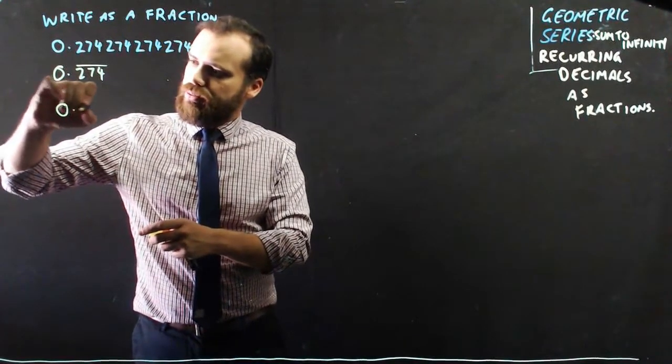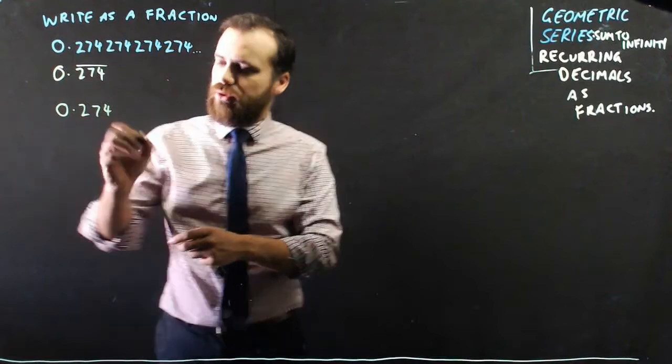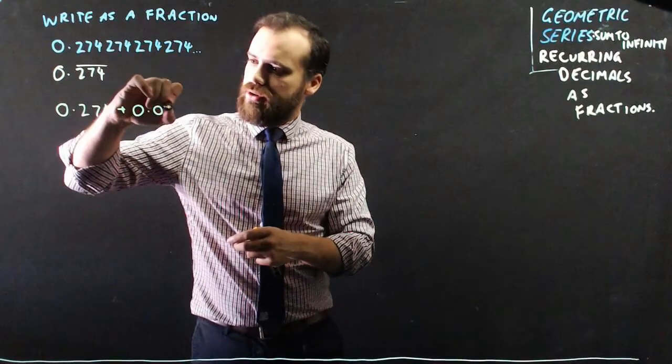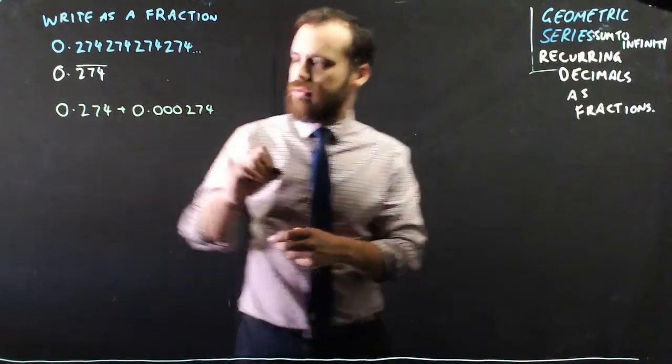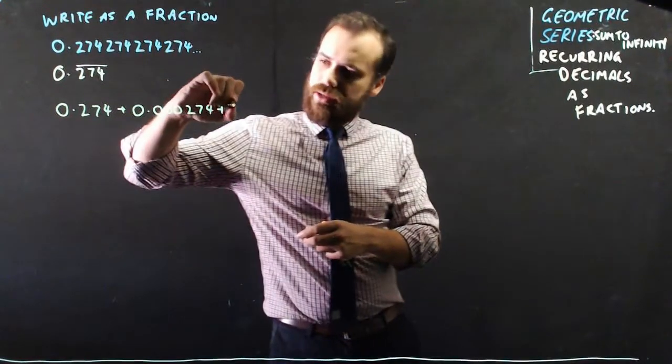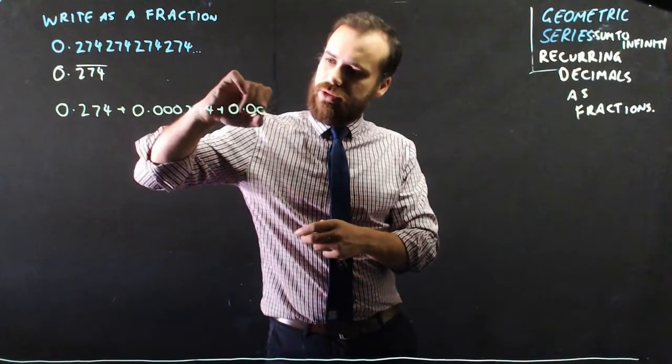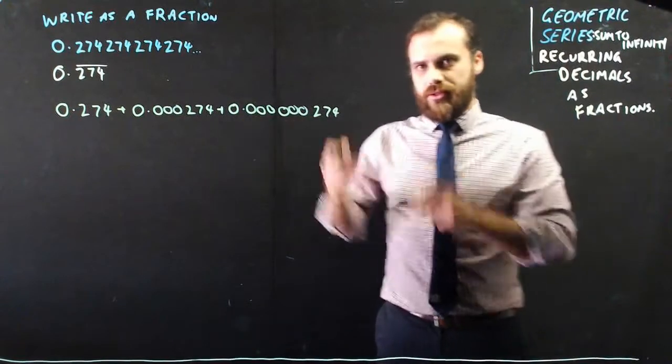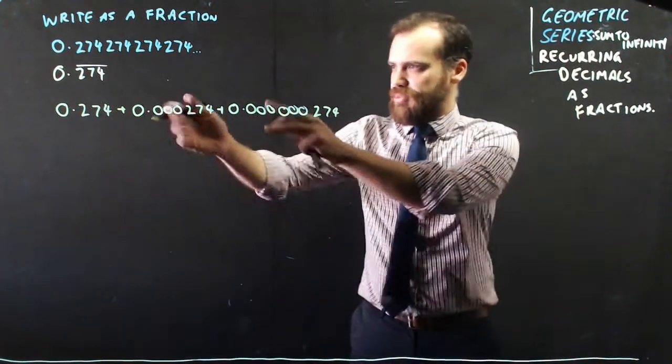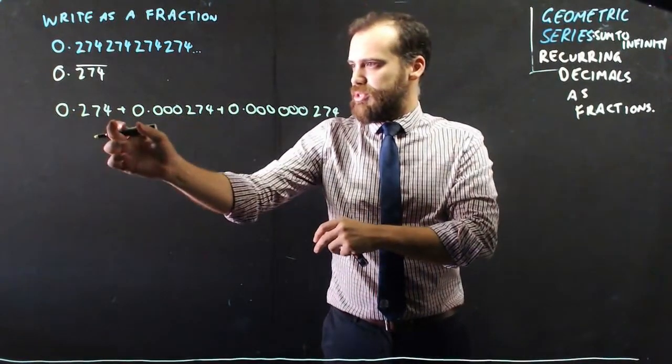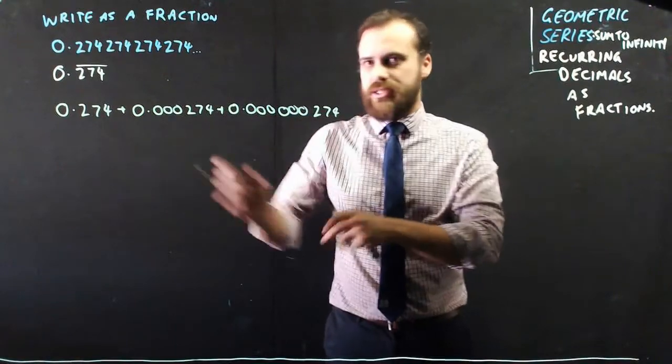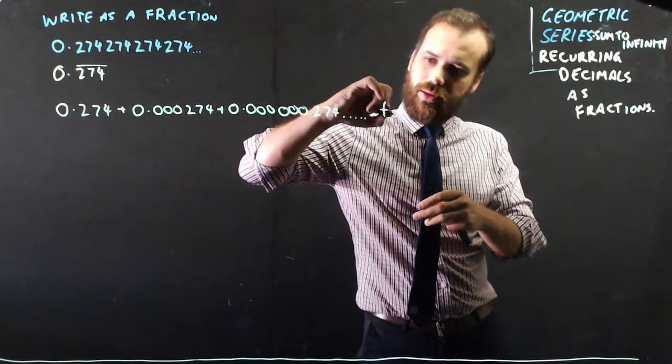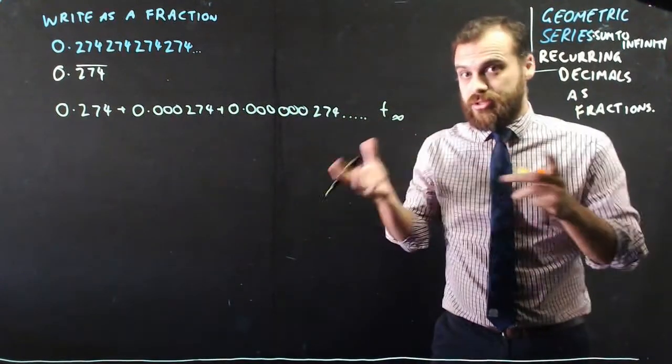You can write this as 0.274 plus 0.000274 plus 0.000274. If you stack them underneath each other, the 274 gets added to here, the 274 gets added to there, and it continues on and on until you get term infinity.